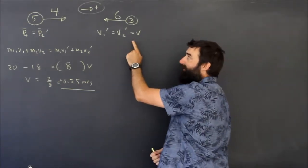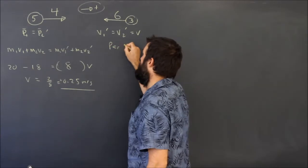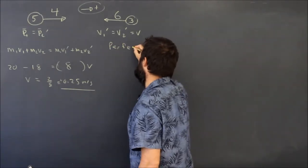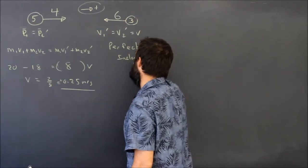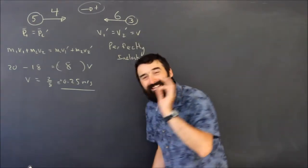So perfectly inelastic collisions, where they stick together, are the easiest. Perfectly inelastic. But they did not stop.